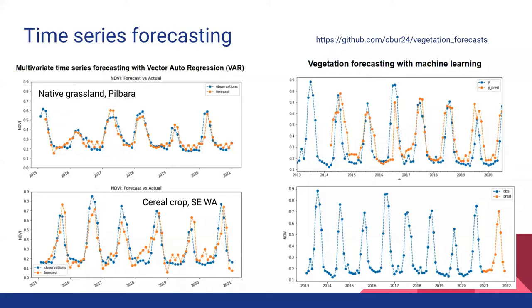The top prediction is for native grassland in Pilbara and the bottom is for a cereal crop. The NDVI for grasslands is very much driven probably exclusively by rainfall unless it's groundwater dependent, so it seems to have better predictive ability there. Whereas in the cereal crop, it tends to be less accurate because there are obviously a lot of anthropogenic drivers. You can see it's always late predicting the decline of NDVI because it's harvested — that's why it declines, not just due to rainfall. Given these datasets are 10 km and 30 km resolution, I think those are pretty decent predictions.